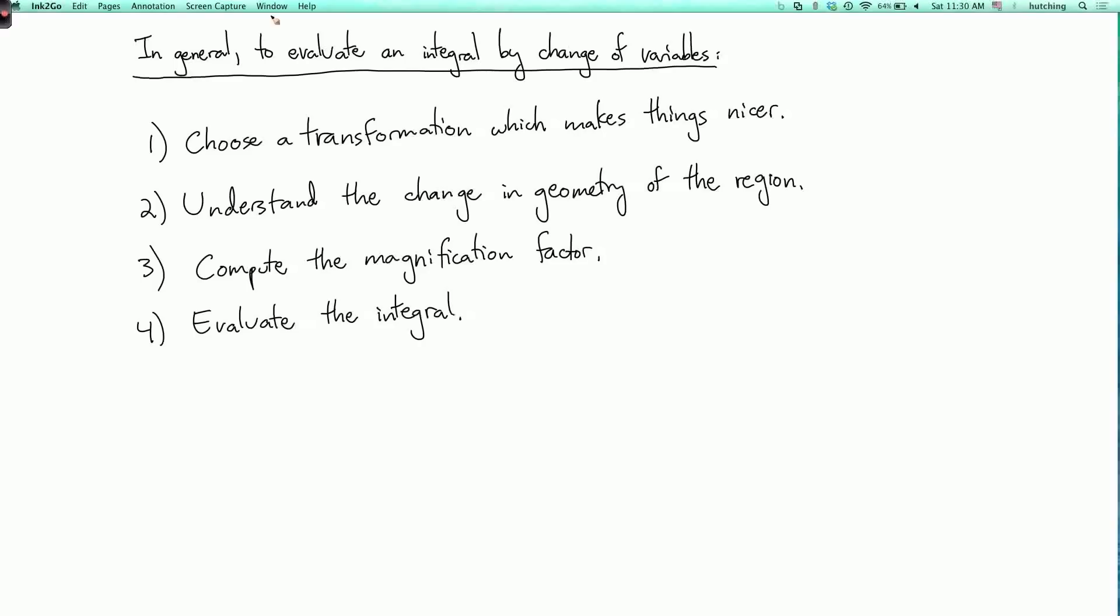So the general procedure has four steps. First, you want to pick the transformation. Here you need to be clever. You need to figure out what transformation or change of variable is going to make the integral nicer and easier to evaluate or understand.